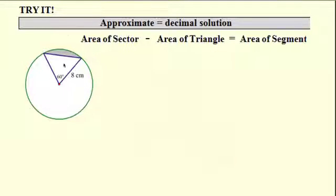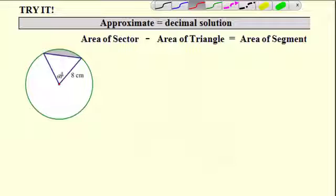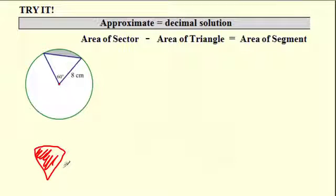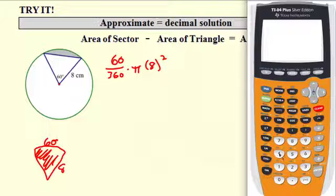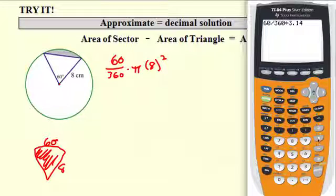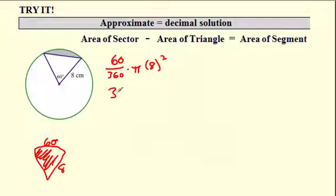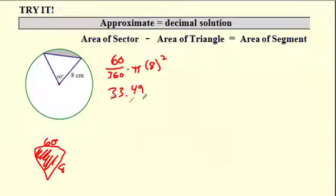Let's find the area of this segment. I'll find the area of the sector first — that slice of pizza with a radius of 8 and a 60-degree angle. So it's 60 over 360, times pi r squared. It says approximate, so going to the calculator: 60 divided by 360, times 3.14, times 64 (which is 8 squared), gives 33.49. So 33.49 is the approximate area of the entire sector.